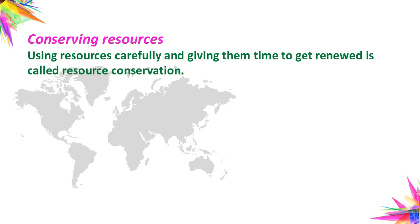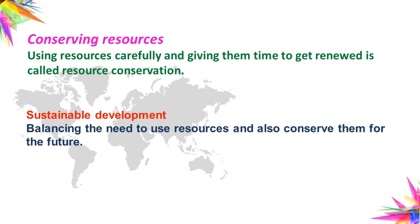Using resources carefully and giving them time to get renewed is called resource conservation. For example, if you sow a sapling, it takes 5 or 6 years to become an adult tree, and the plant gets renewed over time. Sustainable development is balancing the need to use resources and also conserve them for the future's sake.